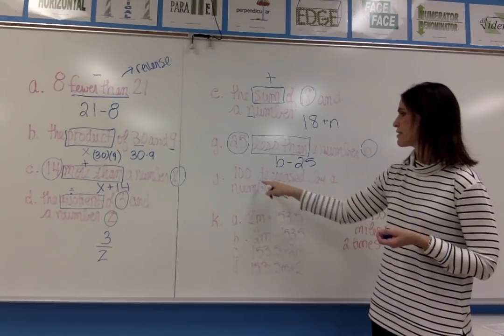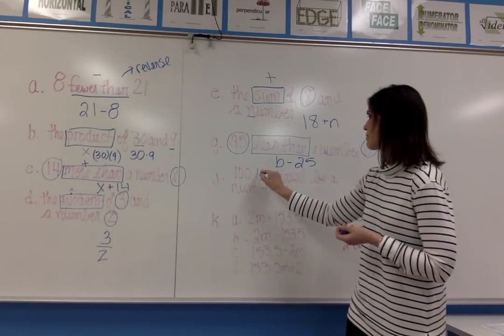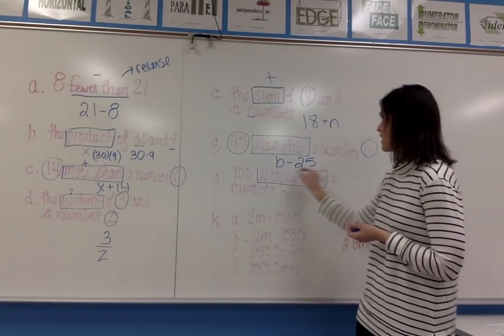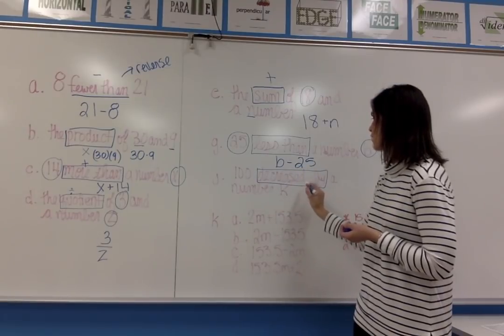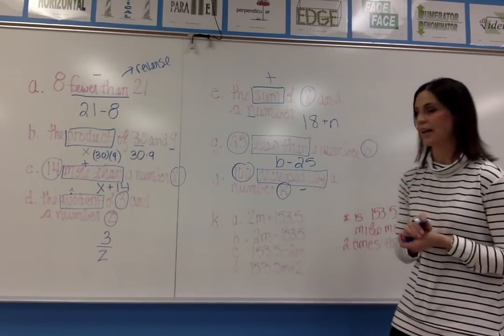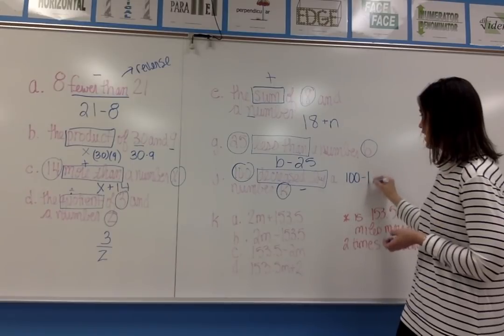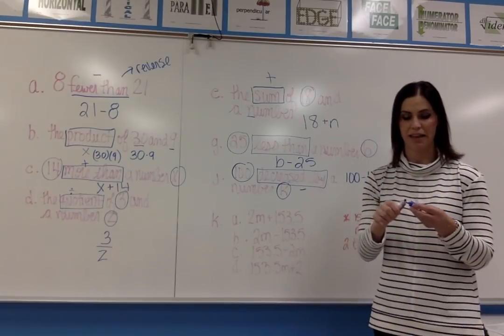The next example is 100 decreased by a number K. My phrase here, decreased by, means to subtract. I have a value of 100 and a variable K, so it's 100 minus K because it's decreased by that number.